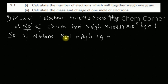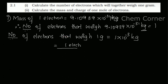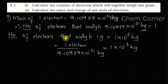Now we need to calculate the number of electrons that will weigh one gram. Since we're working in kilograms, we convert one gram to kilograms: 1 gram = 1×10⁻³ kg. We then cross-multiply. This gives us one electron divided by 9.10939×10⁻³¹ kg, multiplied by 1×10⁻³ kg. When you divide 1 by this value, you get 0.1098×10 to the power of 31 minus 3.